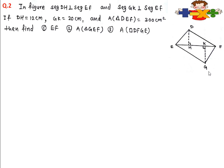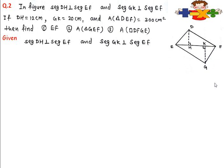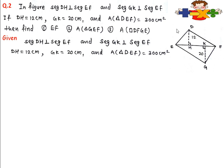Let us solve the next question. In the figure, there is triangle DEF and triangle GEF. DH is perpendicular on EF and GK is perpendicular on EF. DH is given as 12, GK is given as 20, and the area of triangle DEF is given as 300. We have to find three values: EF, the area of triangle GEF, and the area of the whole quadrilateral.